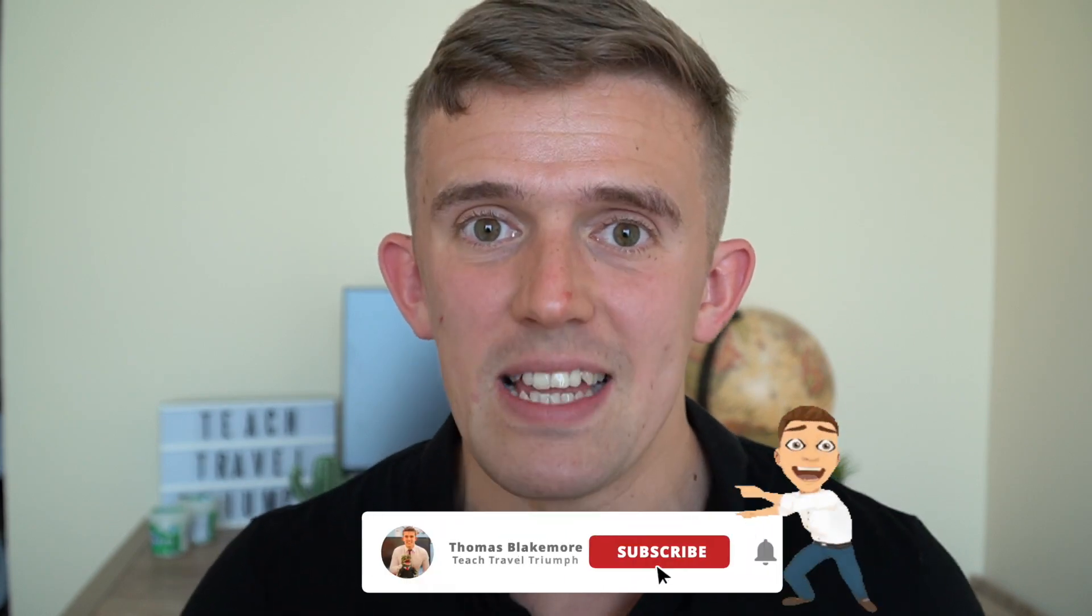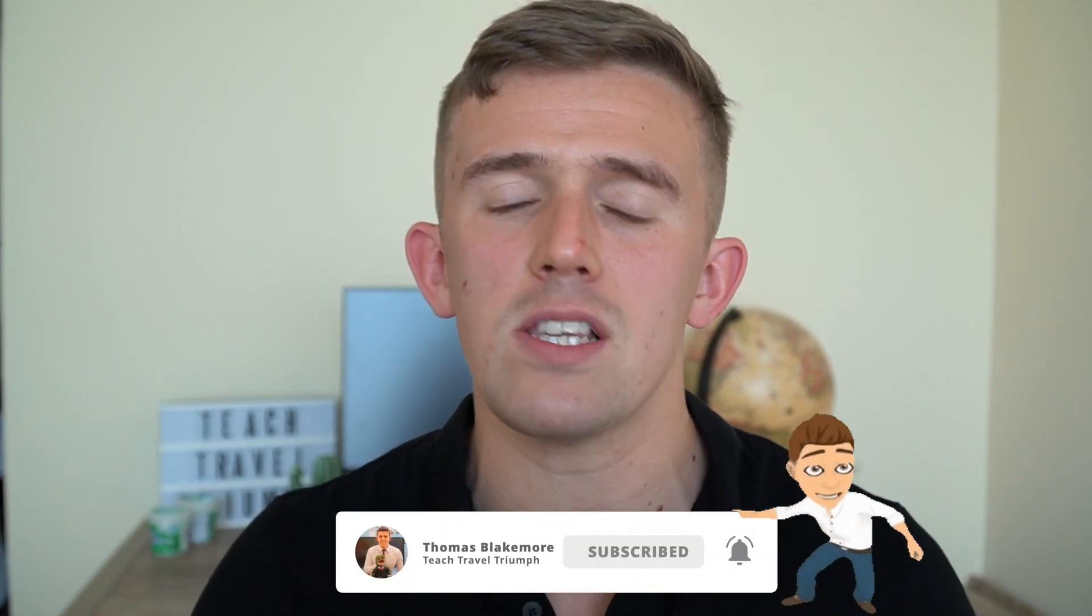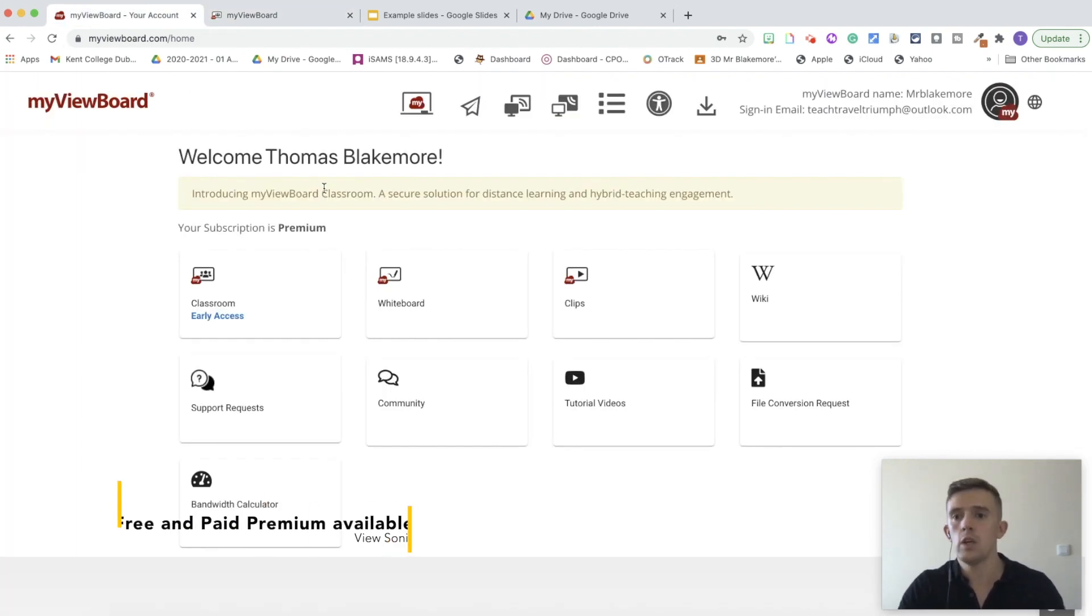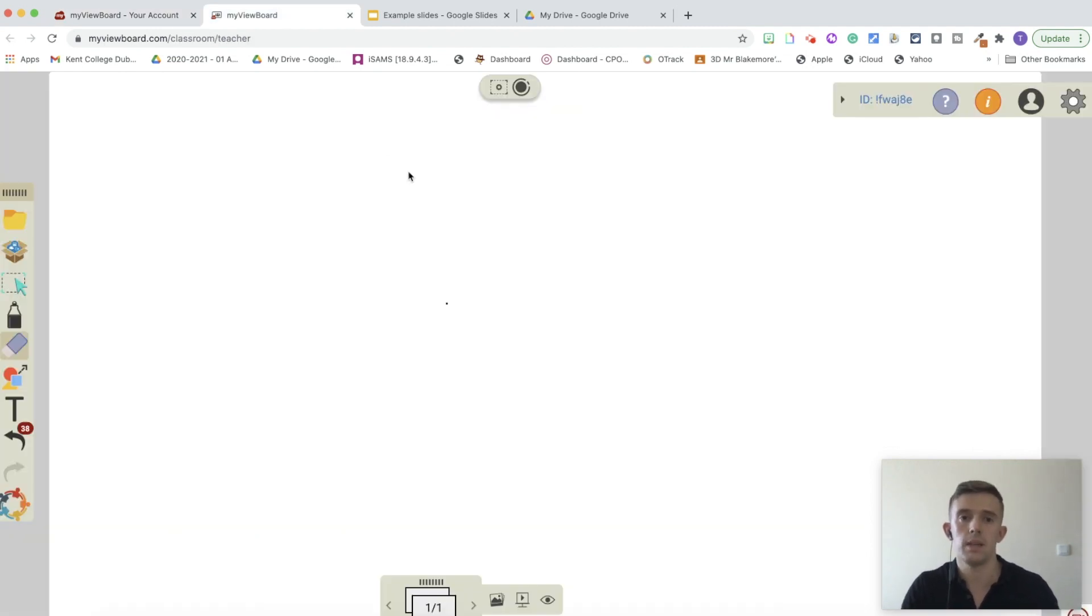If the subscribe button down below is still red, please consider subscribing as I create a range of different teaching videos. So, let's jump straight into the video. This is the MyViewBoard that's going to allow us to write on Google Slides. Now, to access this, you will need to go onto the MyViewBoard. You will sign up using the link that I've shared in my description, and then access the Classroom page, which will take you through to something that looks like this.